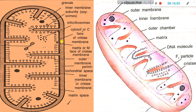Looking at the sectional view: this is the outer membrane and this is the inner membrane. The inner membrane is very important. The space between them is called the outer chamber and perimtochondrial space, also called the outer compartment.